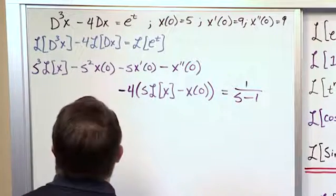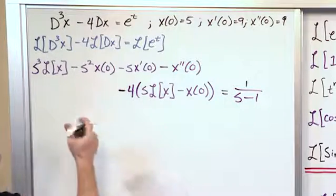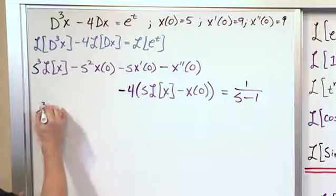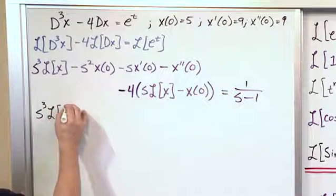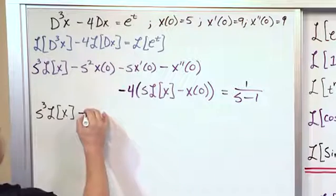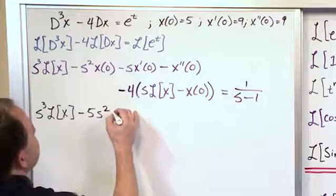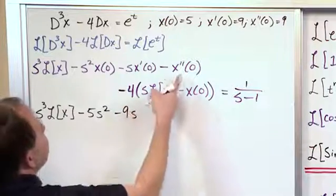And then what we're going to do is distribute everything in, put our initial conditions in, and simplify it. So we will have s cubed Laplace of x. Then we have minus x of 0 is 5, so it would be 5s squared. This x prime is 9, so it would be negative 9s. This is also 9, so it would be negative 9.